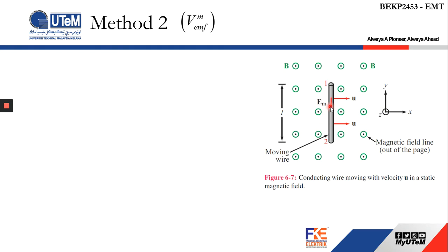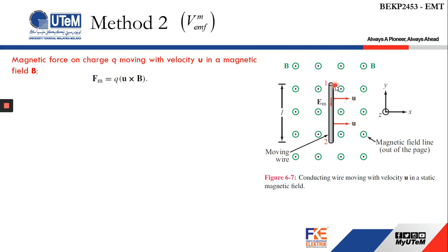Consider a wire with a length of l moving across a magnetic field B. In this case the wire is moving in the positive x direction while the magnetic field is going out of the page in the direction of positive z. The wire contains free electrons. When we consider the magnetic force acting on a particle with charge q moving, we can go back to the magnetic force equation from magnetostatics: Fm equals q u cross B.